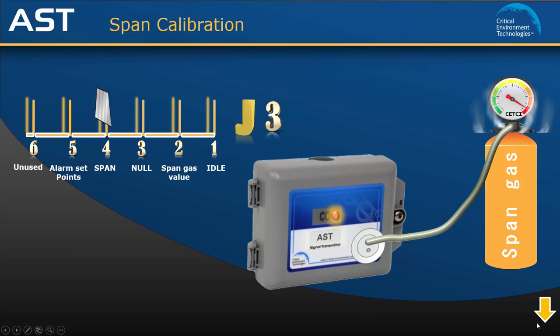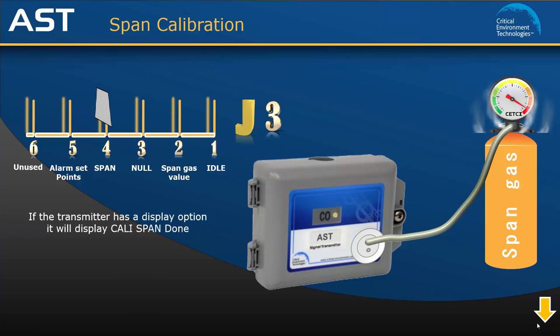Once the countdown is finished, the LED will change back to solid green, indicating the procedure is complete. If your AST has the optional display, it will show Cali span done. Move the jumper back to the idle position and remove the span gas.